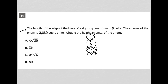The volume of the prism is 2,880 cubic units. So V equals 2,880 cubic units. What is the height in units of the prism? Well, it all has to do with how I would find the volume of this prism. It's going to be the length times the width times the height, like we typically see when we have a three-dimensional quadrilateral — basically.